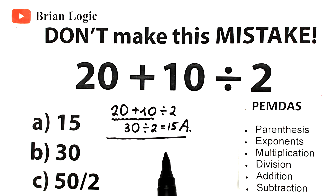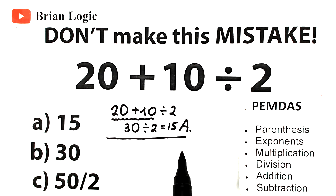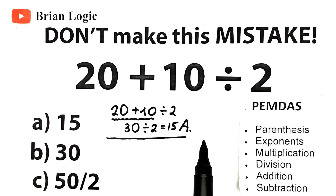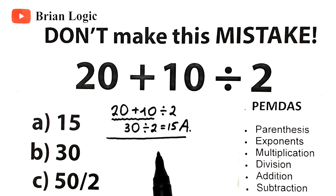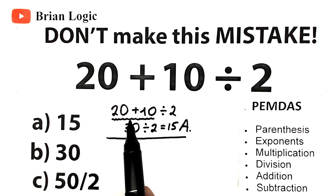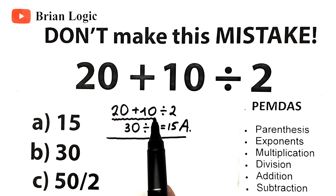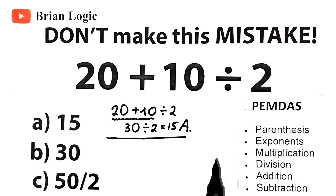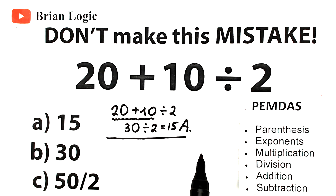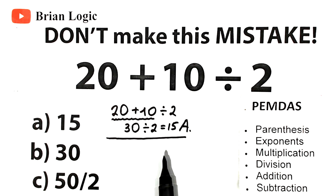Order of operations is what lets us correctly evaluate an expression. You use PEMDAS when there are two or more operations. In our case we have two operations, so it's a great case to use PEMDAS. If there is only one operation, we do not use any order of operations.